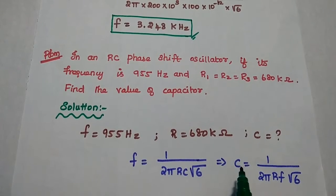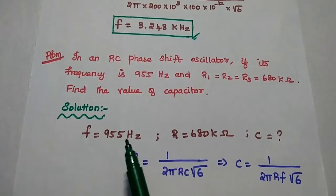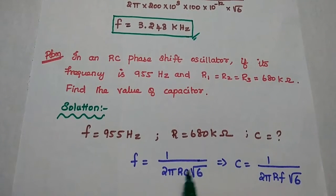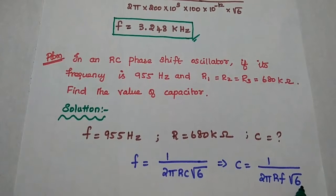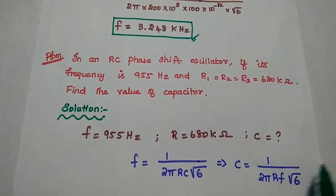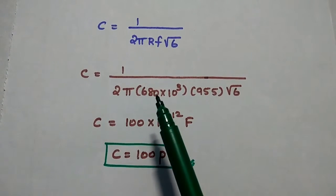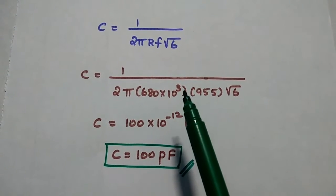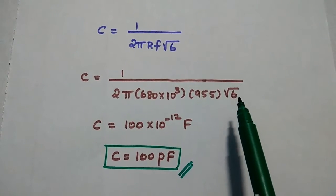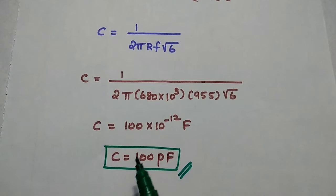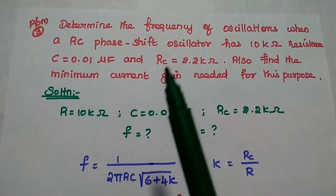Here the unknown value is C, so we rearrange: C is equal to 1 by 2 pi R into F square root of 6. Substituting: C is equal to 1 by 2 pi into 680 into 10 to the power 3 into 955 into square root of 6. We get the capacitance value as 100 pico farad.